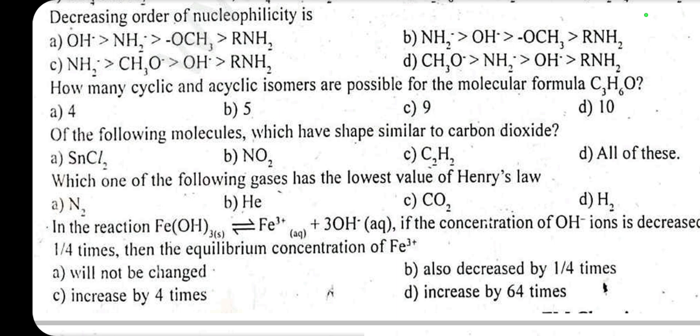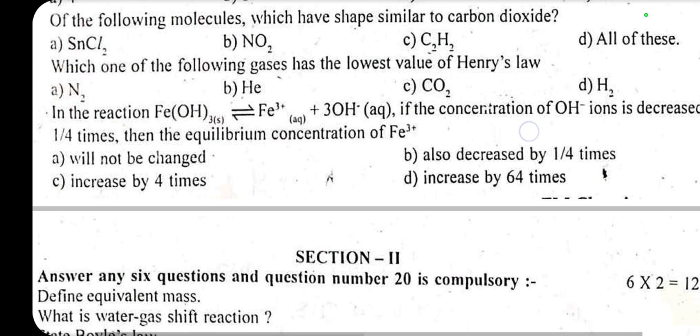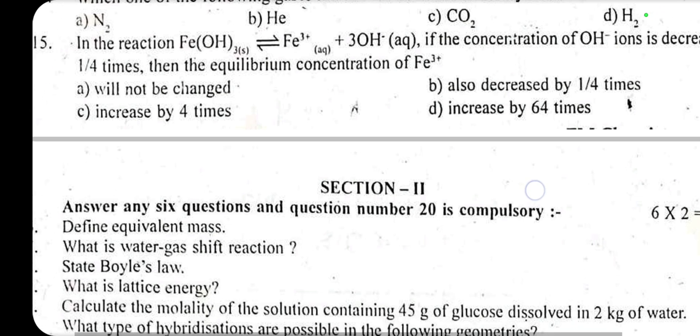Which one of the following gases has the lowest value of Henry's law constant? Answer: carbon dioxide. Question 15: in the reaction where ferric hydroxide undergoes dissociation to give Fe³⁺ and 3OH⁻, if the concentration of OH⁻ is decreased by 1/4 times, then the equilibrium concentration of Fe³⁺ increases by 64 times.